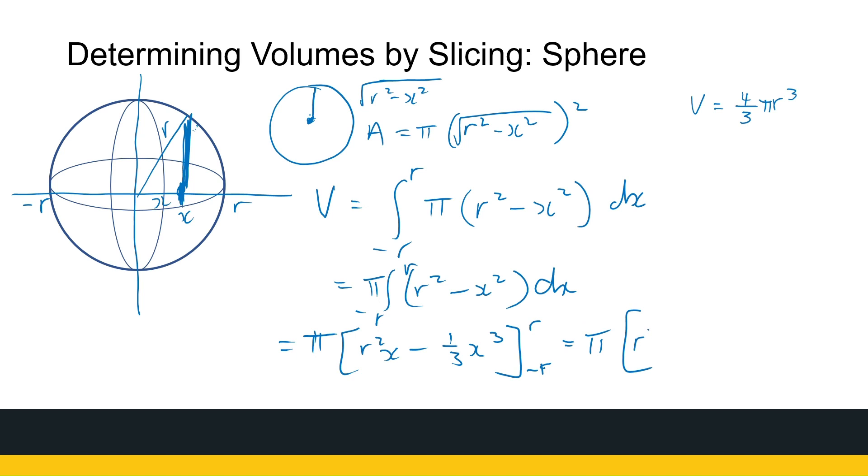So we've got pi times, substitute R in, and I've got R cubed minus a third R cubed minus, substitute minus R in, and I've got minus R cubed plus a third R cubed. And all of that will get us to 4 over 3 pi R cubed.